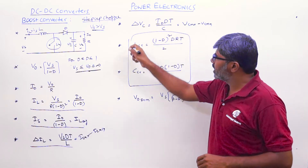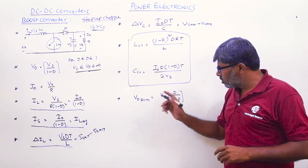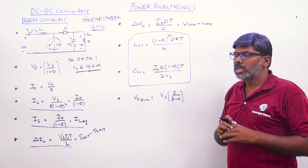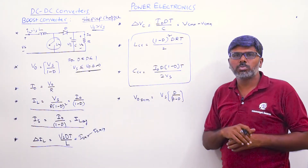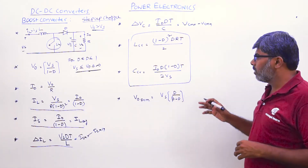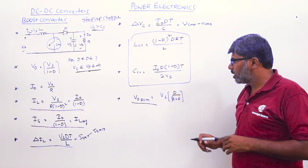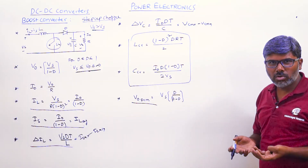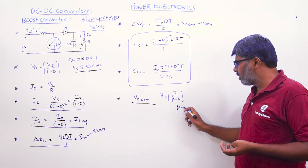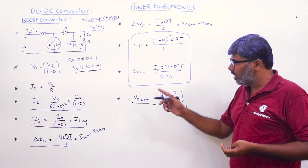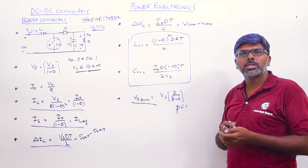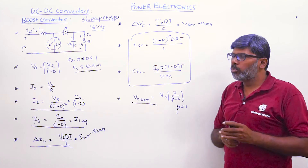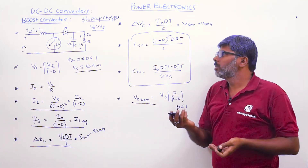If the inductance and capacitance values are below Lcr and Ccr, we get discontinuous conduction mode. In DCM for the boost converter, V0 = Vs × D / (β − D), where β < 1. Substituting β < 1, the output voltage in DCM is greater than in CCM. This completes the analysis of the boost converter — a step-up chopper.